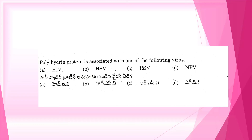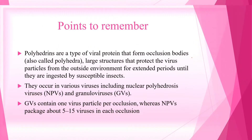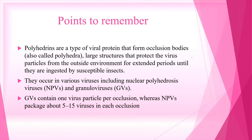HIV is eliminated. Then comes HSV, that is herpes simplex virus — also eliminated. Then C, RSV, that is respiratory syncytial virus — also eliminated. The correct option is option D, NPV.